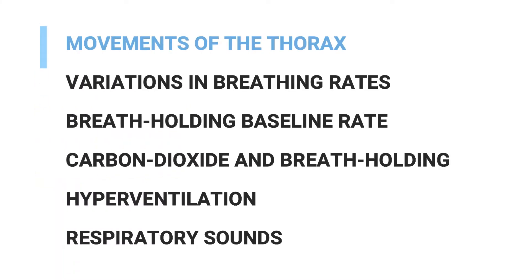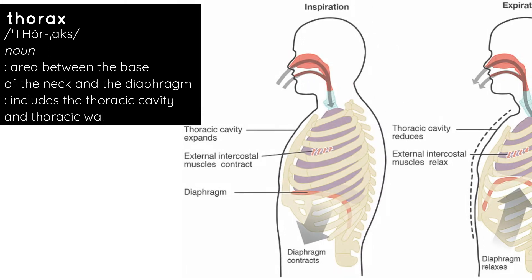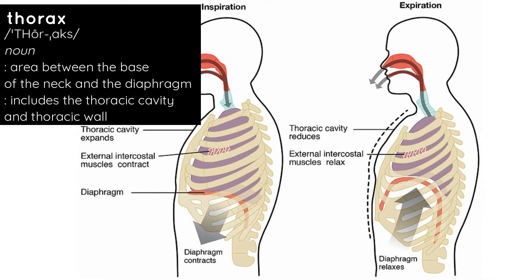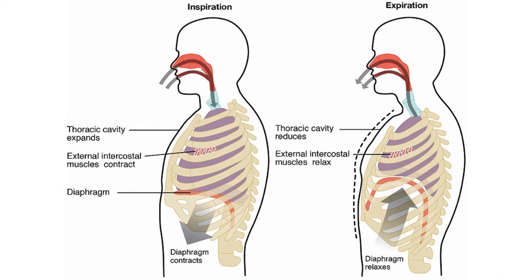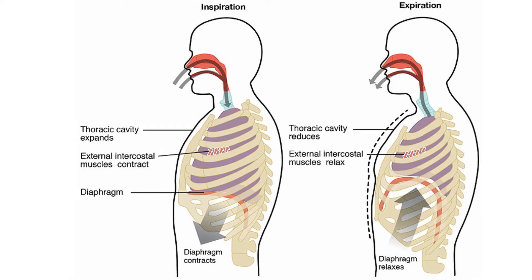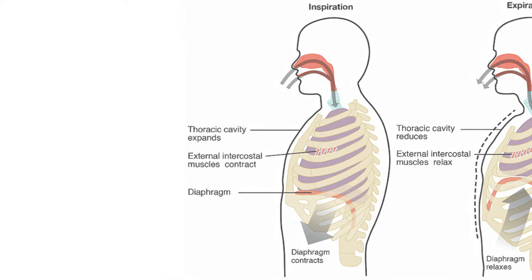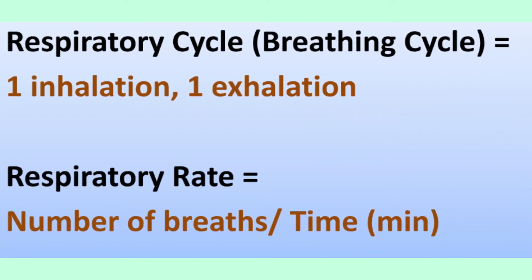You can observe that during inspiration, your thorax expands, while during expiration, your thorax reduces circumference. Inspiration and expiration is most of the time involuntary. This is called quiet breathing. Contrary to that is forced breathing. When exhibiting forced breathing, our thoracic cavity expands or shrinks more compared to quiet breathing. A breathing cycle comprises one inhalation and one exhalation.